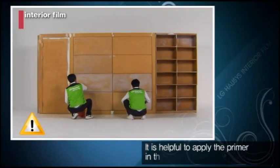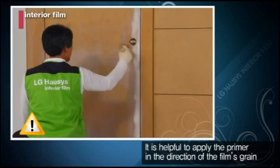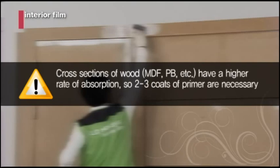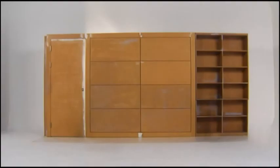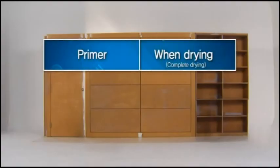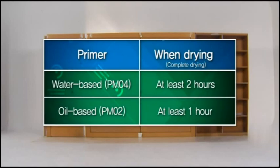Pay particular attention to puttied areas. It is helpful to apply the primer in the direction of the film's grain. Cross sections of wood have a higher rate of absorption, so two to three coats of primer are necessary. Drying time is at least two hours for water-based and one hour for oil-based primers. But you should make sure to check for complete dryness as drying times can change according to site conditions.